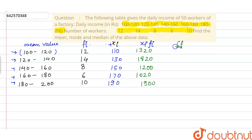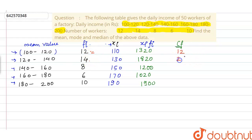Now we write the cumulative frequency. Cumulative frequency is the sum of the frequency for a class and all preceding classes. For the first class it is 12. For the next: 14 plus 12 equals 26. Then 26 plus 8 equals 34. Then 34 plus 6 equals 40. And finally 40 plus 10 equals 50.